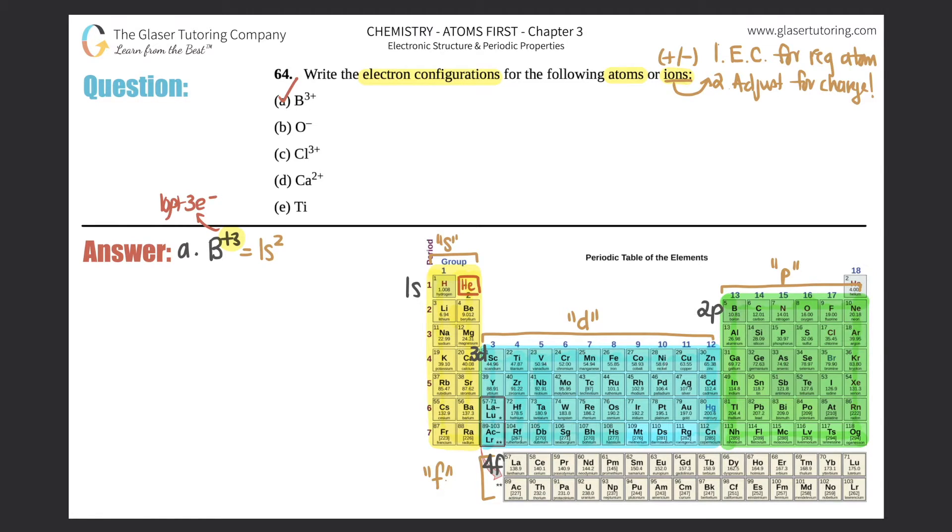Now let's do the same thing for part b: O⁻. It just says minus, so whenever there's just a minus or a plus we assume that it's a minus one. Let's do the same thing. We start from the beginning: 1s², 2s². Now we're trying to figure out oxygen, so we first take the electron configuration for just regular oxygen, which would be 2p⁴.